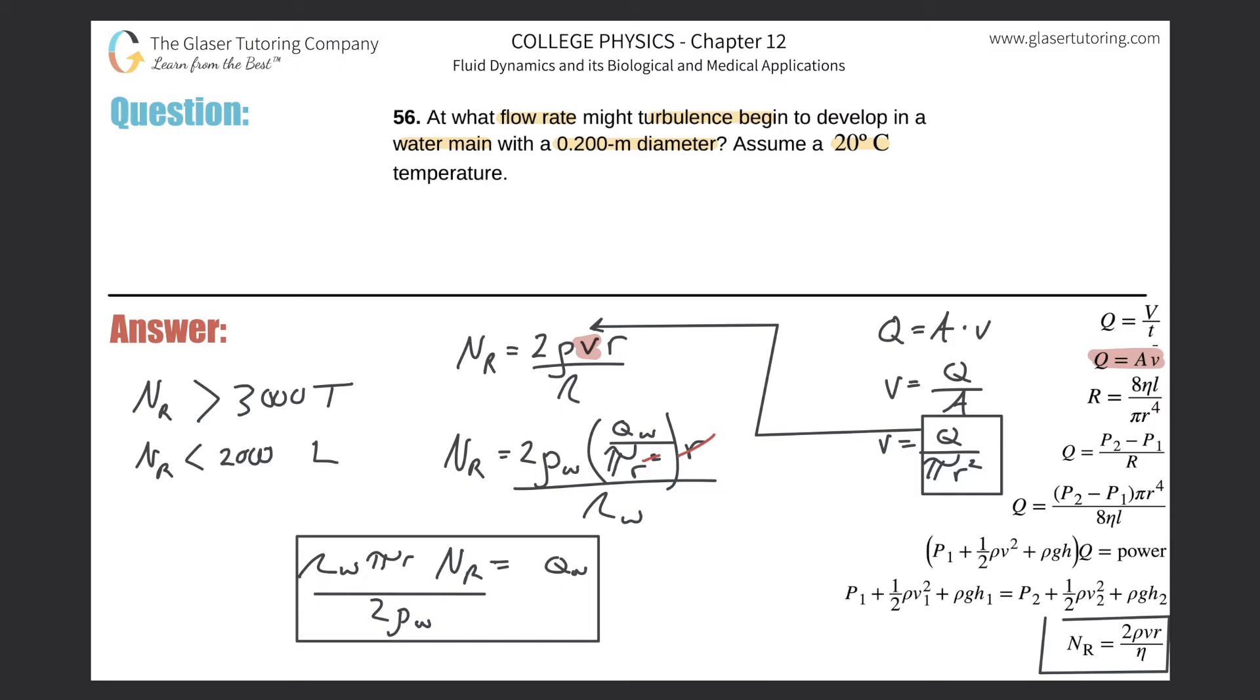Now we know that what we want to do now is we want to figure out what flow rate might turbulence begin. So I know this is technically the case. Sometimes they say even equal to. Again, it's a little variable. But what I'm going to do is I'm going to take essentially 3,000 and plug it on in for that Reynolds number, all right? Because I know that that's the point at which basically the flow rate is going to start to become turbulent.